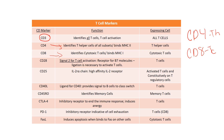All T cells in the body will express CD3 — CD4 cells express CD3, CD8 cells express CD3, even the gamma delta T cells express CD3. CD3 is on everything that is considered a T cell; it is the marker of the T cell lineage. CD3 acts as basically the intracellular signaling machine along with CD4 and CD8 for the T cell receptor. If you don't have CD3 and CD4, or CD3 and CD8, you're not going to effectively transduce signals down to the nucleus to allow these cells to carry out their functions.